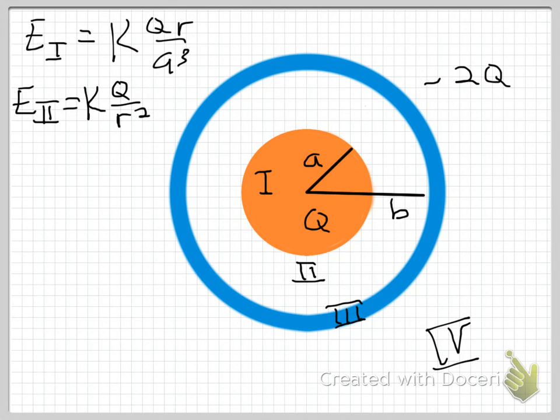This is an example video on how to apply Gauss's Law to this particular charge configuration. The situation is, at the center of this configuration we have an insulating sphere of radius A,